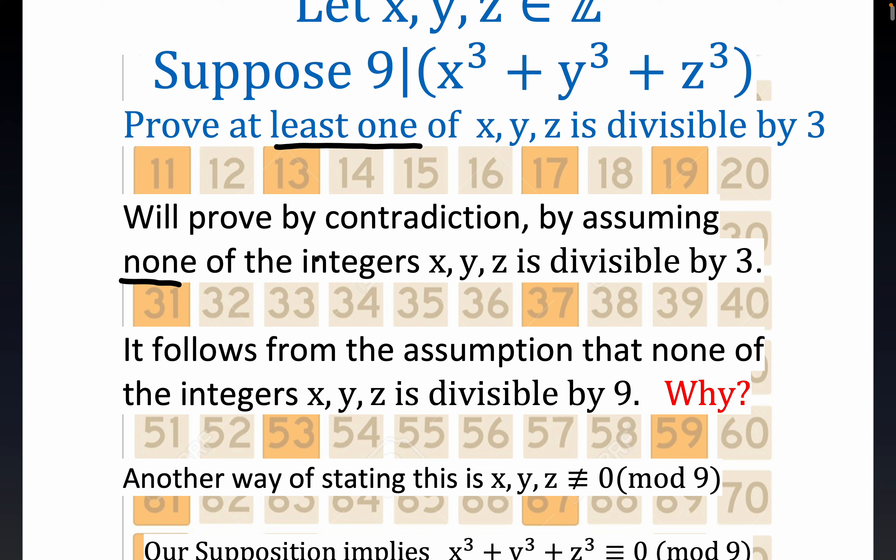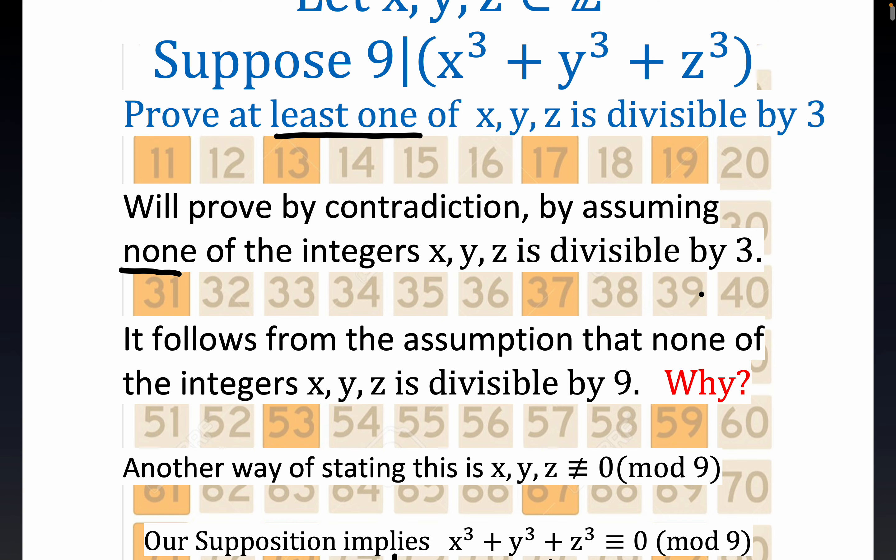It's true because we assumed something that led to a contradiction, and that reductio ad absurdum argument means that we must have one of them that is divisible by 3. So right here, again, we prove by contradiction by assuming that none of the integers is divisible by 3, right? Well, we got a contradiction when we made that assumption. We contradicted this fact. So that means at least 1 is divisible by 3.